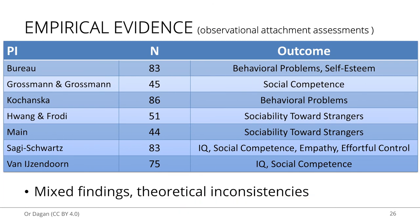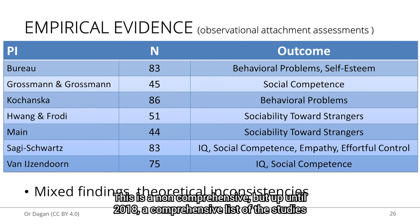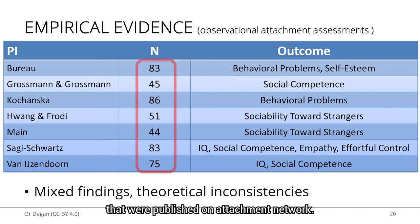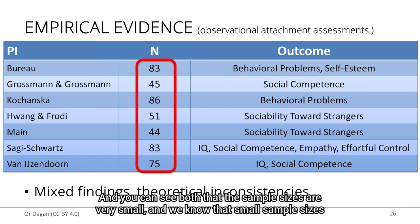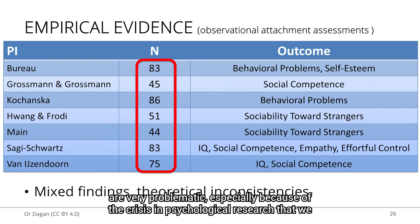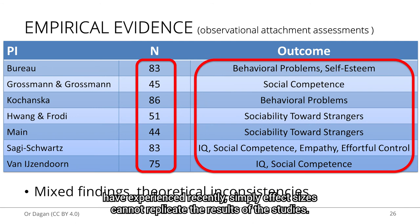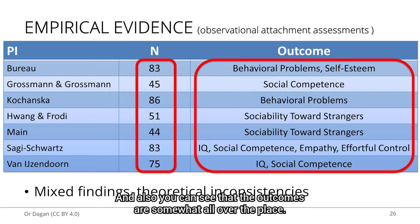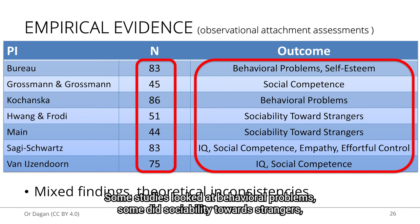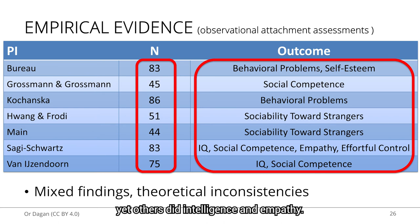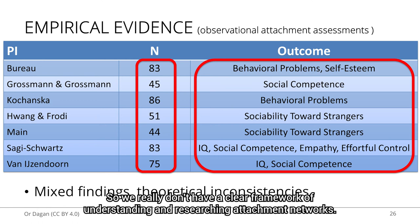This is a non-comprehensive but up to 2018 comprehensive list of studies published on attachment networks. You can see that sample sizes are very small, which is very problematic especially because of the replication crisis in psychological research — effect sizes cannot replicate the results of the studies. Also, the outcomes are somewhat all over the place: some studies looked at behavioral problems, some at sociability towards strangers, yet others at intelligence and empathy. We really don't have a clear framework for understanding and researching attachment networks.